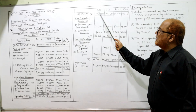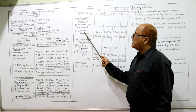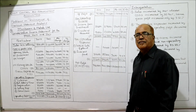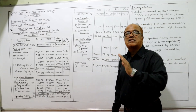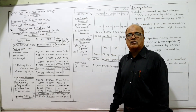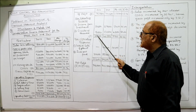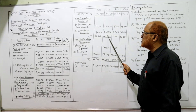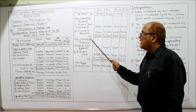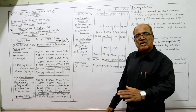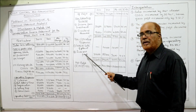Now for non-operating incomes: income from investment and dividend received are given on the credit side of the profit and loss account. Their totals are 30,600 and 40,500, denoted as F. Non-operating expenses from the debit side are loss on sale of plant and interest paid, denoted as G.